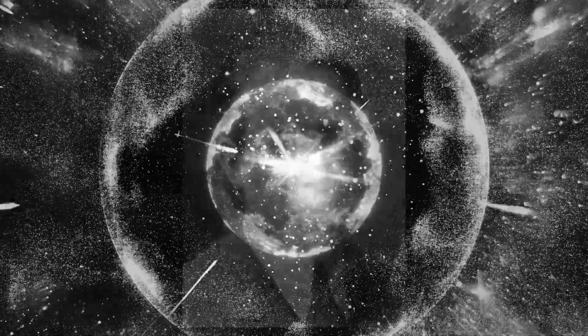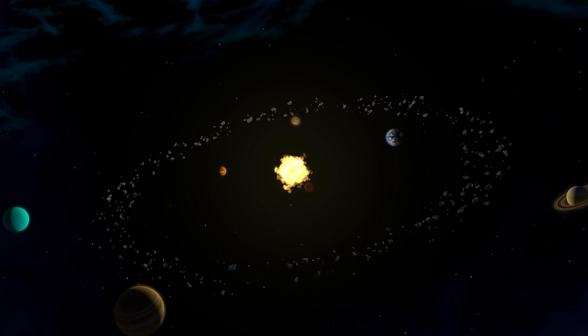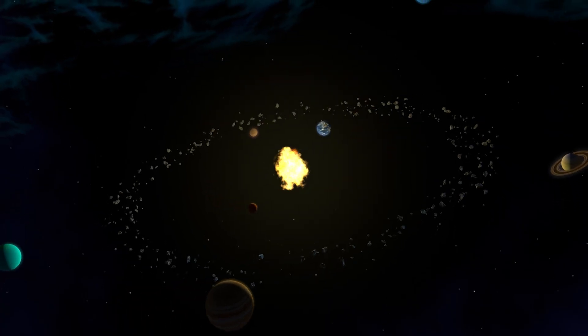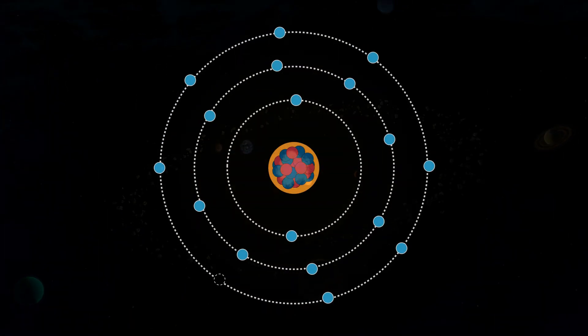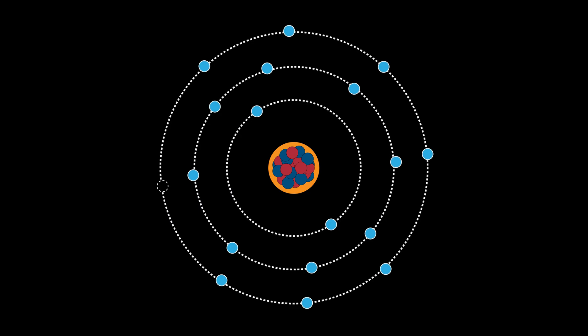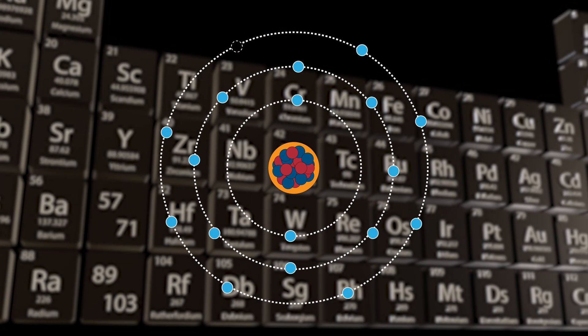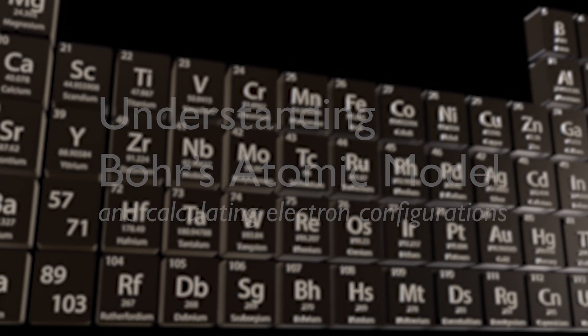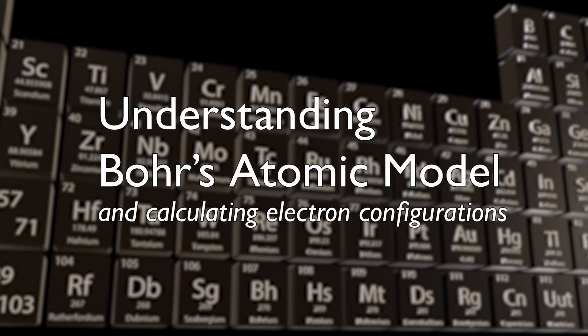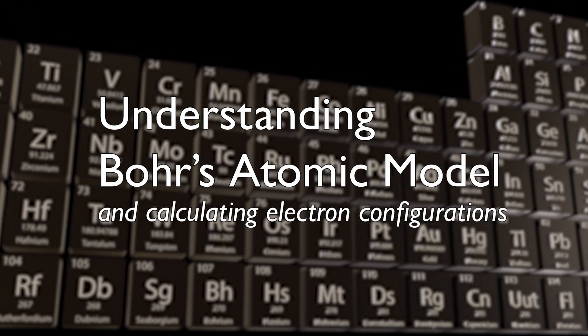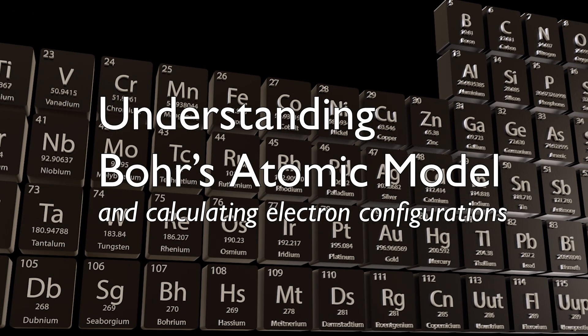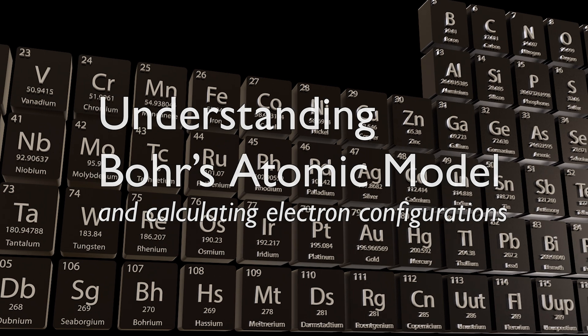One key idea - Niels Bohr's model of the atom - borrowed from the ideas of the structure of our solar system in an attempt to explain the invisible world inside the atom. Join us as we look at this key idea that transformed our understanding of matter and led chemists ever closer to their goal of explaining how the universe works.